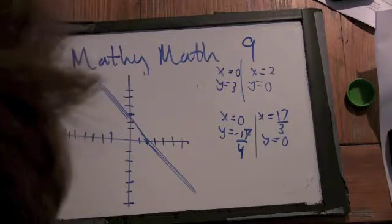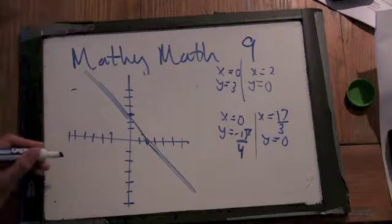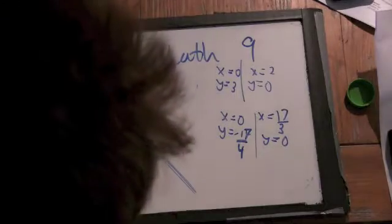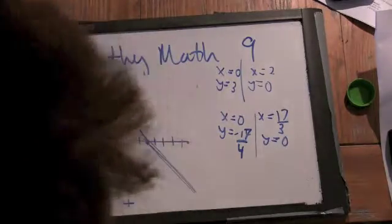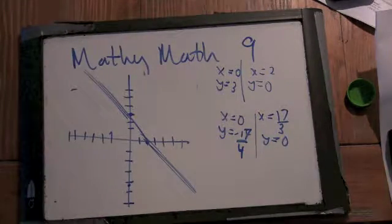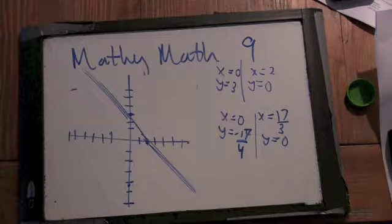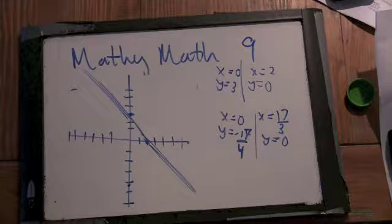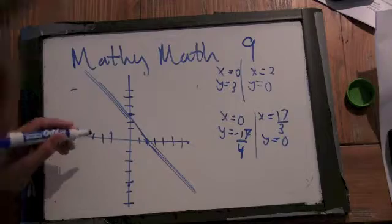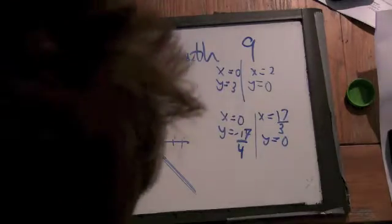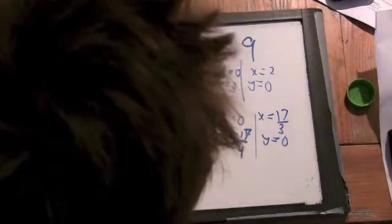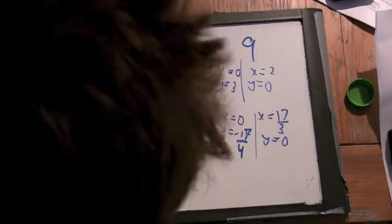x equals 0, negative 17 fourths. It's a little bit bigger than 4. Or, a little bit smaller than negative 4. 17 thirds. Here. Wait. I forgot one. It's right there.